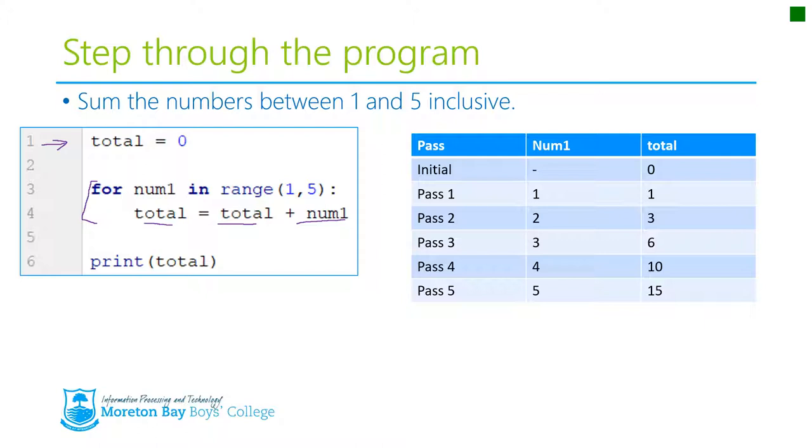So what we have if you look over here I've drawn up my table. If you look over here and in the table you can see that I've got the initial variable value. So initially the initial area up here when it starts, which is just here, the number or num1 is worth nothing. It doesn't actually exist. And total equals zero.